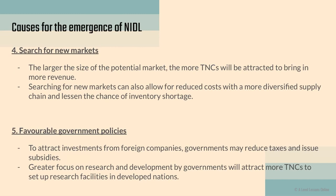Another cause is the search for new markets. The larger the size of a potential market, the more TNCs are attracted to generate revenue there. Searching for new markets allows for reduced costs with a more diversified supply chain and lessens the chance of inventory storage issues. When TNCs look for new markets — for example, India — they naturally want to set up there, which creates jobs both high and low-skilled.